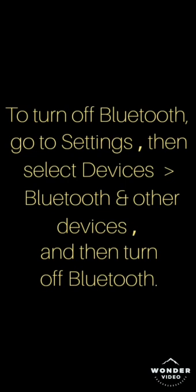To turn off Bluetooth, go to Settings, then select Devices, then Bluetooth and Other Devices, and then turn off Bluetooth. If you don't see the network name, the router or access point might not be set to broadcast the network name. In this case, you must manually connect to the hidden network.